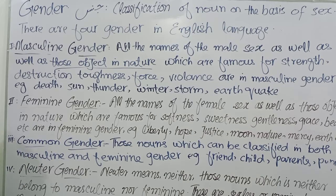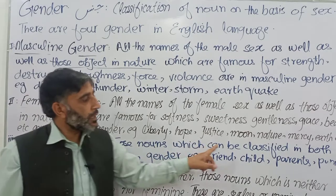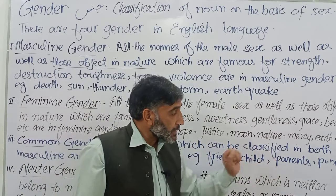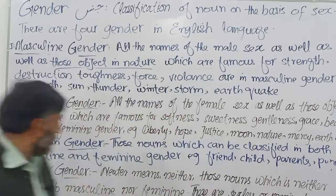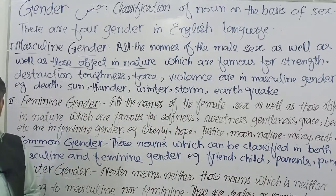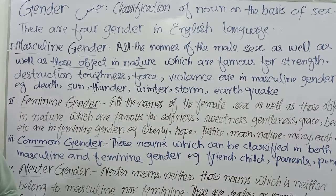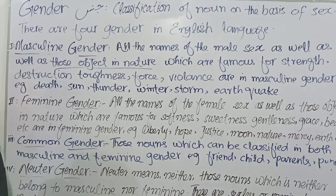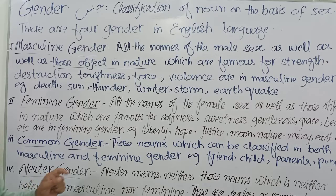Third is common gender — jo muzakkar aur muannas dono ke liye bola jaata hai. Unki darajabandi dono mein hoti hai — muannas ke liye bhi wohi naam hota hai aur muzakkar ke liye bhi wohi naam hota hai. Wohi common gender hote hain.